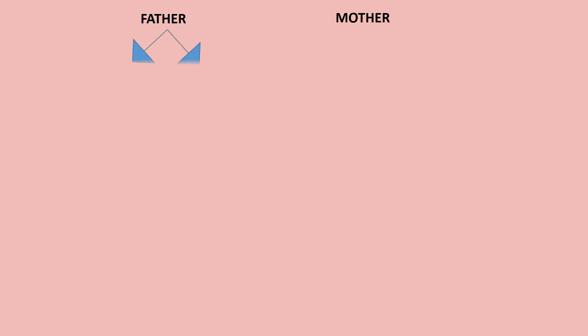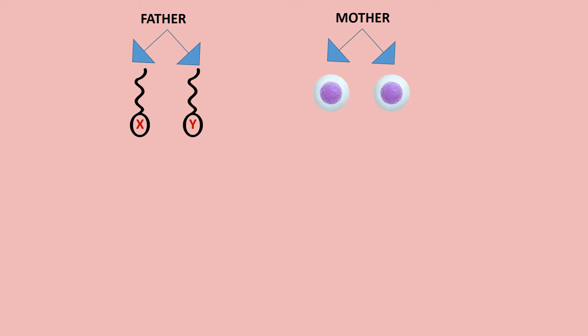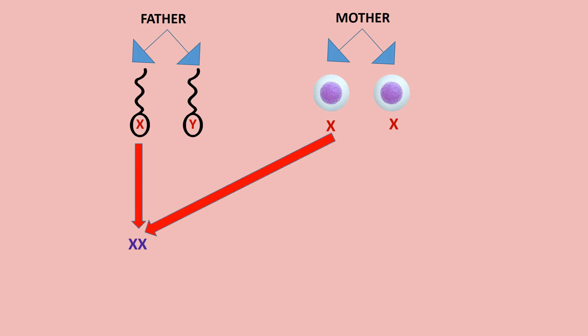The father develops two types of sperm cells: one consists of an X chromosome and the other consists of a Y chromosome. From the mother, both ova consist of X chromosomes only. When the X sperm cell from the father fuses with the X ovum from the mother, it forms XX — giving rise to a female child.